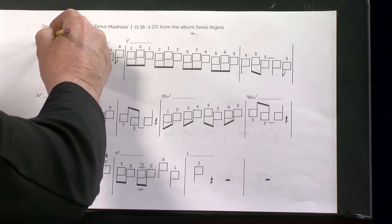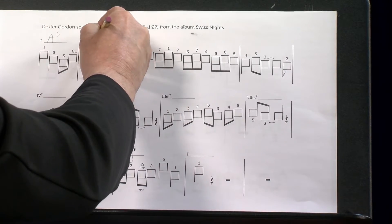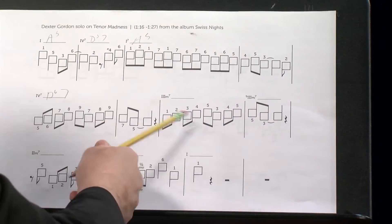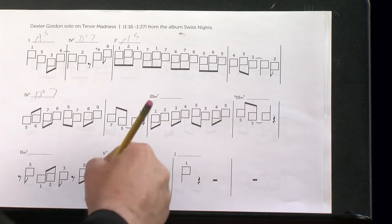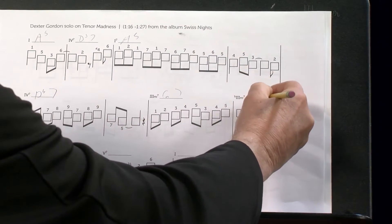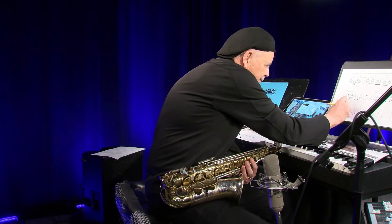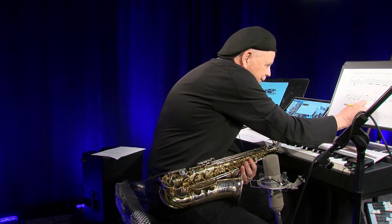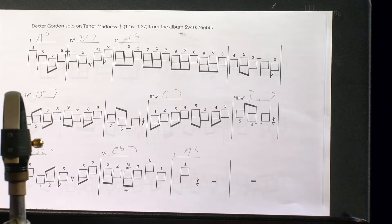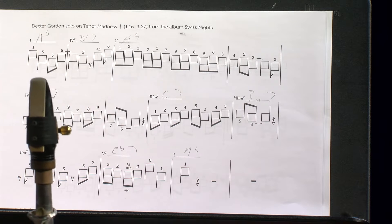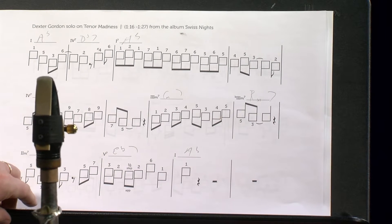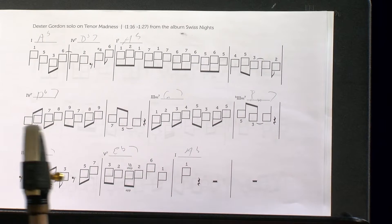If I do this in the key of A-flat, the one chord is A-flat, the four chord is D-flat, then back to A-flat. The three in A-flat — A-flat, B-flat, C — so C is the three minor, and flat-three would be B minor. The two chord in A-flat is B-flat minor seven, the five chord is E-flat seven, and the one chord is A-flat. The scale: A-flat is one, B-flat is two, C is three, D-flat is four, E-flat is five, F is six, G is seven, A-flat is one.